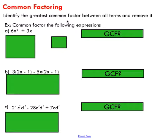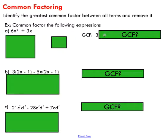The first thing you want to do is identify your greatest common factor. Our first term is 6x squared and our second term is 3x. Looking at just the numerical coefficients — the 6 and the 3 — the greatest common factor between 3 and 6 is 3, since 3 goes into both. That's the greatest common factor for the numerical part.